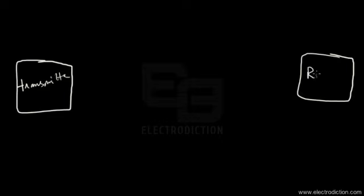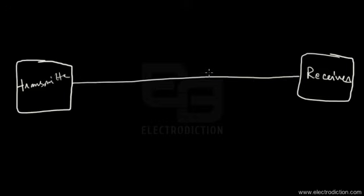To explain the concept, I'll take the help of a transmitter and receiver system. Here is the transmitter and here is the receiver. This represents a digital transmission process, and the digital data from the transmitter is transmitted to the receiver by means of a transmission channel.